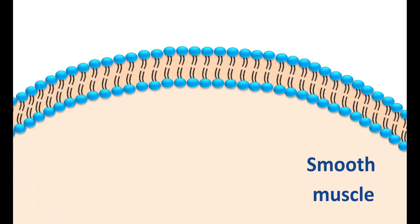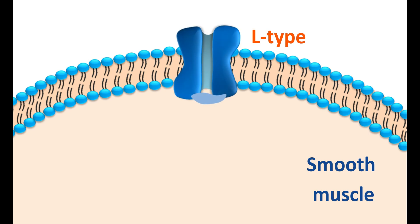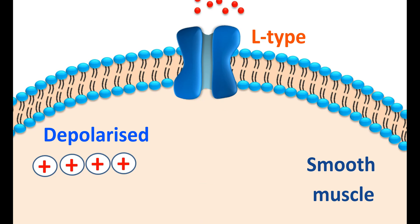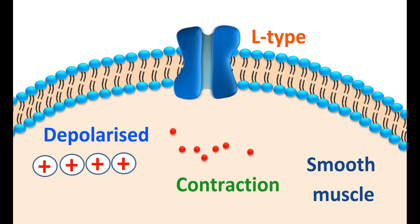When the smooth muscle is depolarized, it can open the L-type calcium channels, resulting in the entry of calcium into the muscle. The increased intracellular calcium levels produce a contraction of the muscle. Even though the contractile mechanism is somewhat different in smooth muscle versus the heart, the role of calcium is the same — it produces contraction of both through L-type calcium channels.